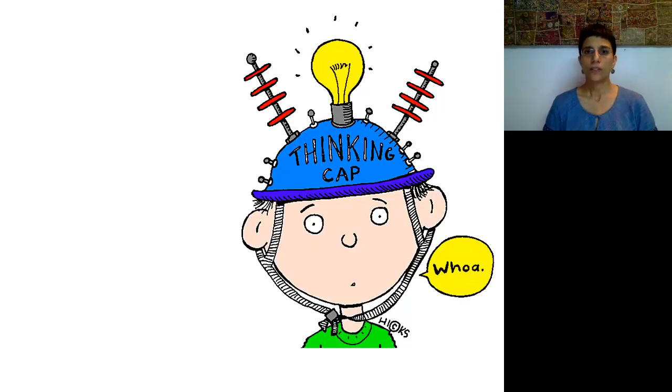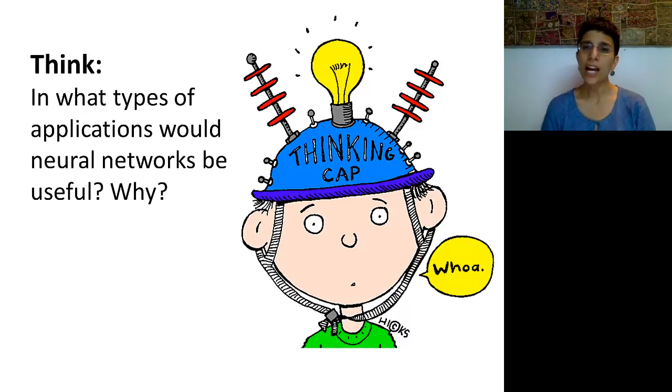To close this video, put on your thinking cap for just a minute and ask yourself, in what types of applications would neural nets actually be useful? And why would they be useful? You can also think about the opposite question. In what applications would you not like to include neural nets? And for what reason?